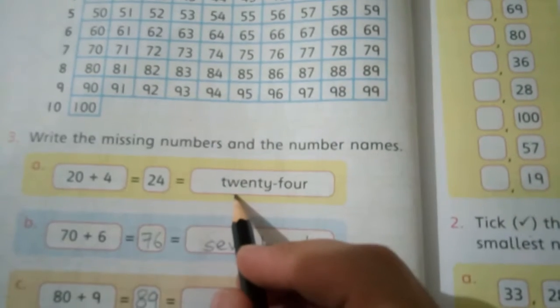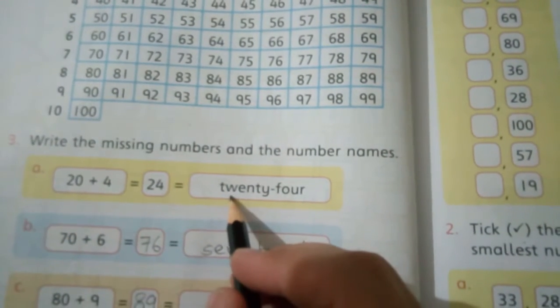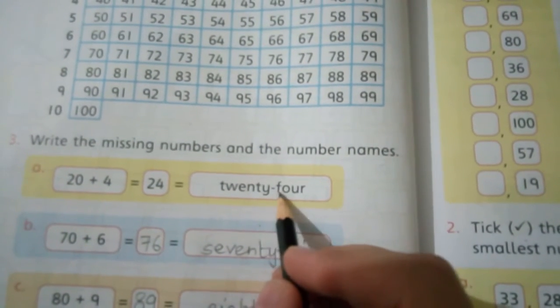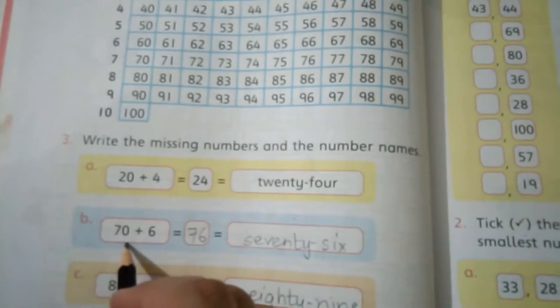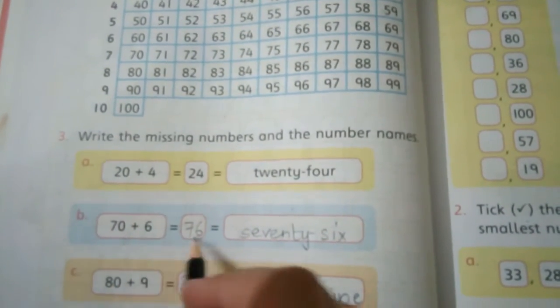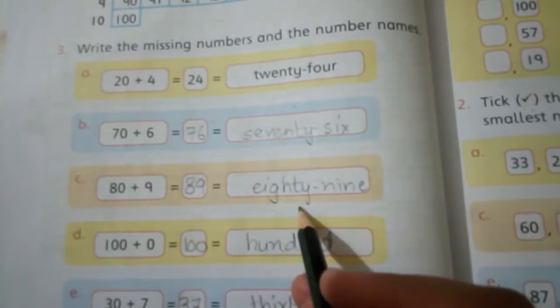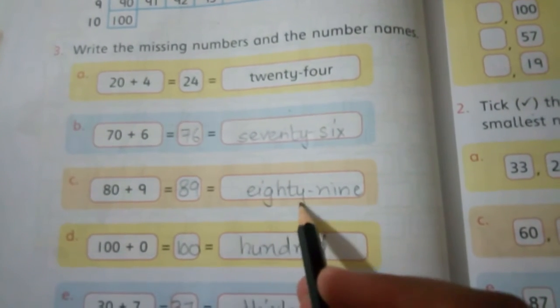20 plus 4 is 24, and the number name of 24 is T-W-E-N-T-Y dash F-O-U-R. Part B: 70 plus 6 is 76. Part C: 80 plus 9 is 89. Spellings of 89 are E-I-G-H-T-Y...